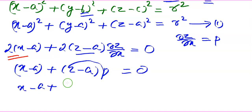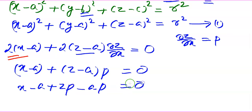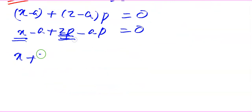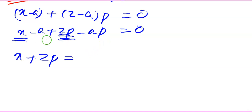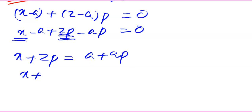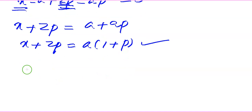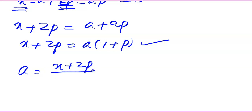Expanding: x + zp − a − ap = 0, so x + zp = a + ap = a(1 + p). Therefore, a = (x + zp) / (1 + p). This is equation 2. Now let us differentiate equation 1 partially with respect to y.